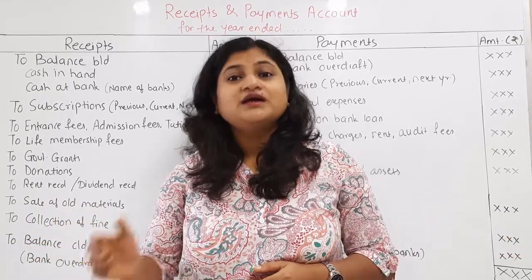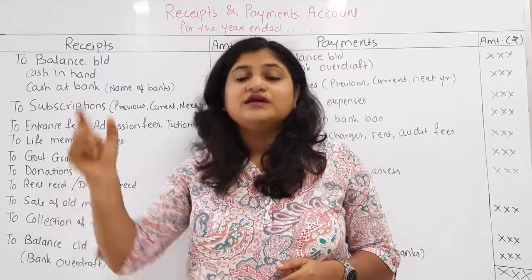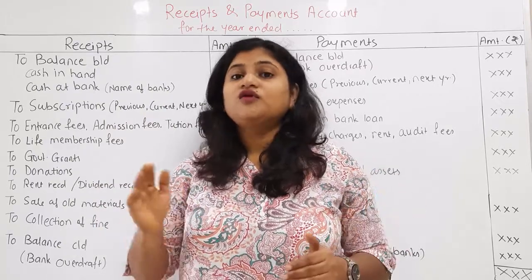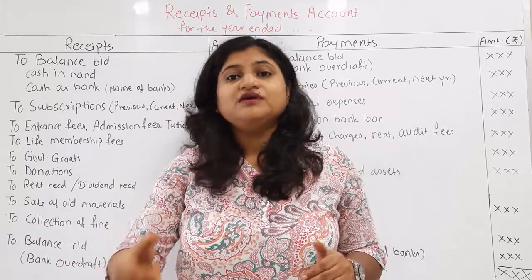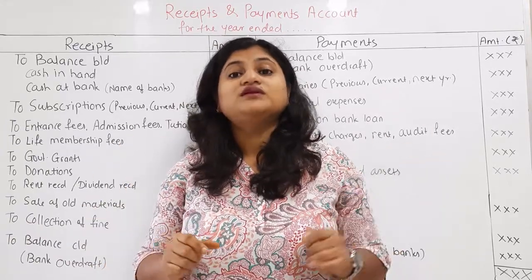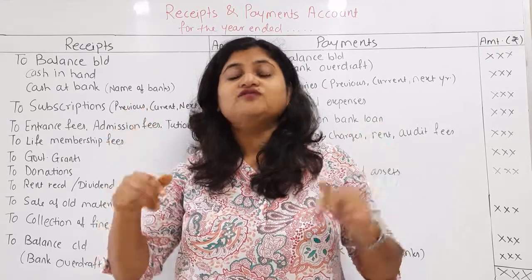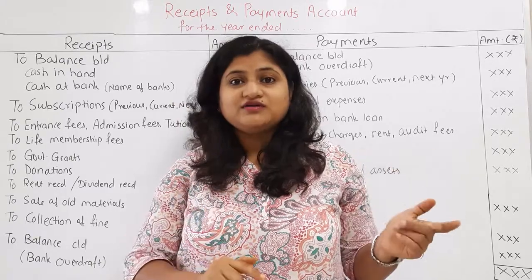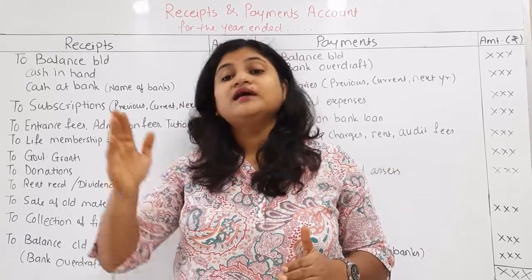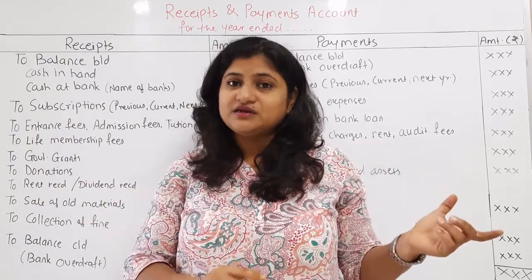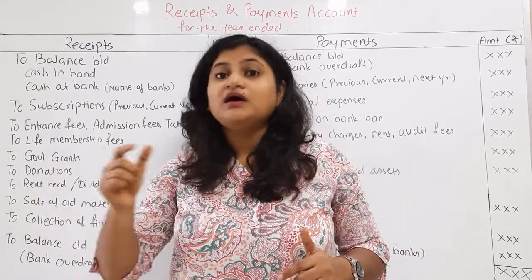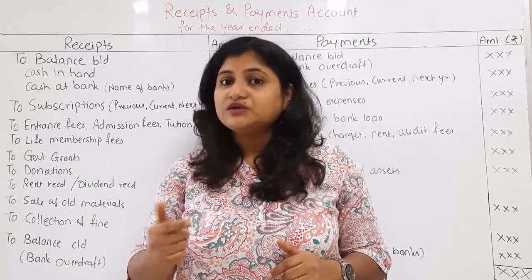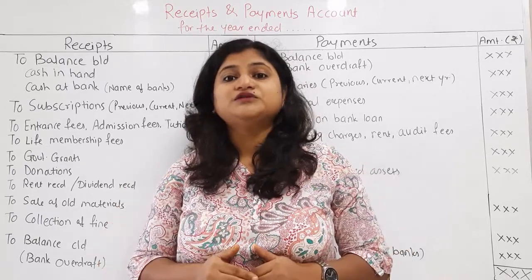Today we are going to see the next topic: the format of receipt and payment account. In earlier lectures, we have seen the meaning of not-for-profit concern, the difference between profit organization and not-for-profit concern, types of receipt — capital receipt and revenue receipt — as well as types of payment: capital expenditure, revenue expenditure, and deferred revenue expenditure. If you haven't seen those videos, please check the link given below in the description box.